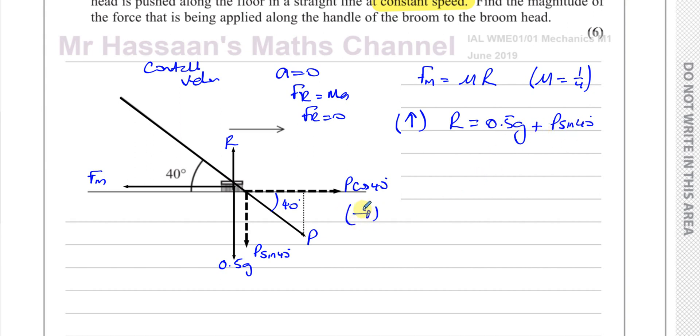And the other equation is if we resolve in the direction that it's being pushed, which is horizontally, we have one force acting in this direction, which is P cosine 40. And in the opposite direction is the friction, and we know that the resultant force is equal to zero. So we can say Fm, the frictional force, is equal to P cosine 40. They must balance each other out for it to be going at constant velocity. So Fm equals P cosine 40. And as we know, Fm equals mu R. So what I can say is that Fm is mu R. So I can say that P cosine 40 is equal to mu times R. So it's a quarter times R, which is 0.5 G plus P sine 40.